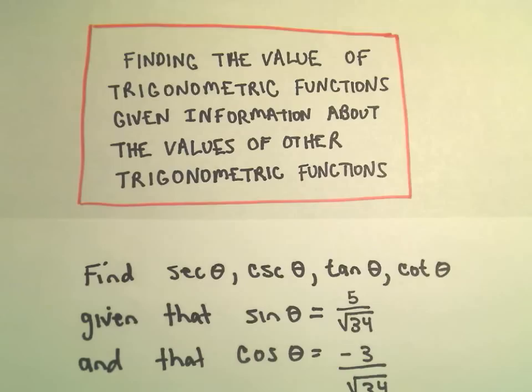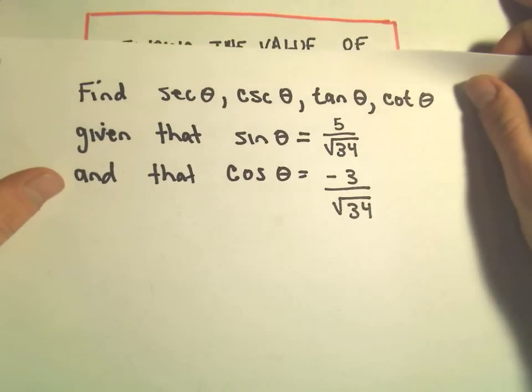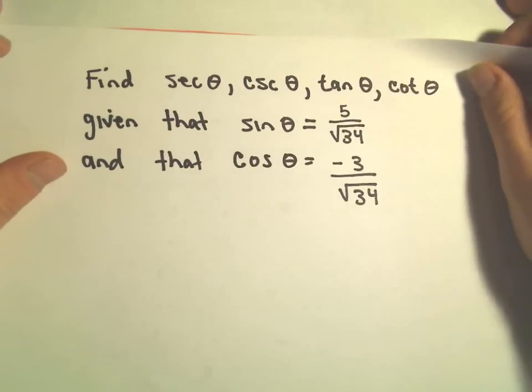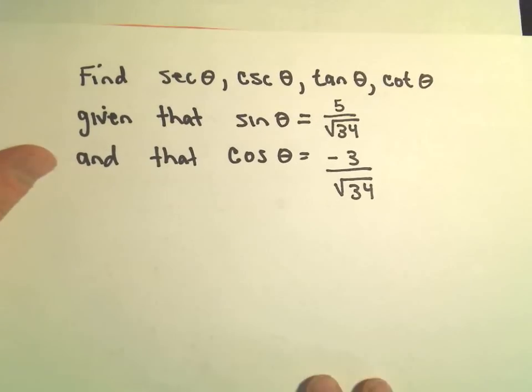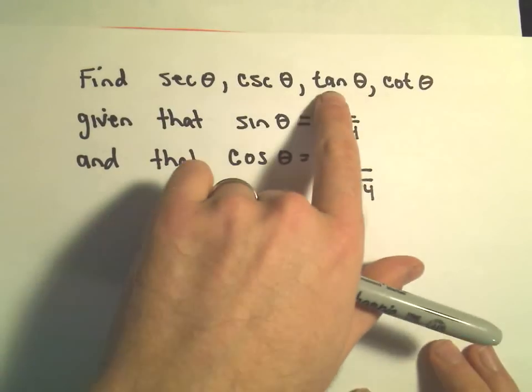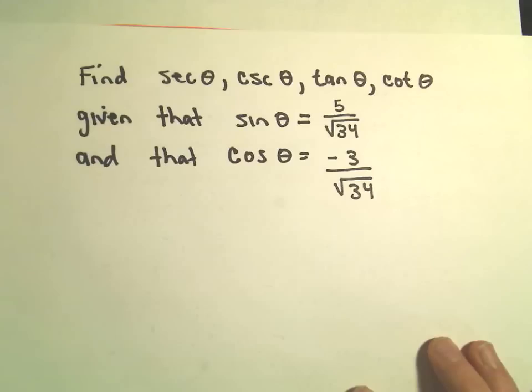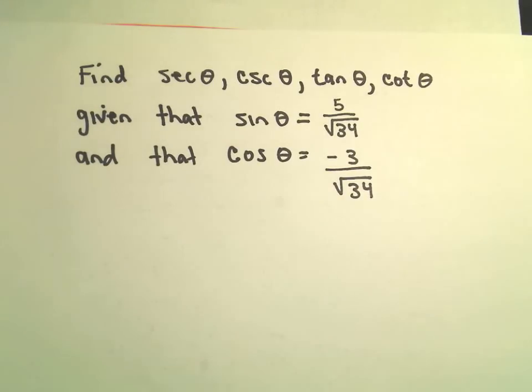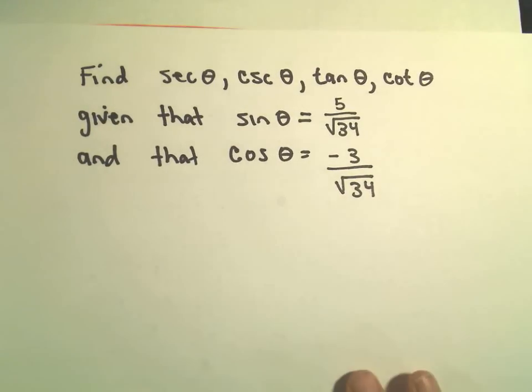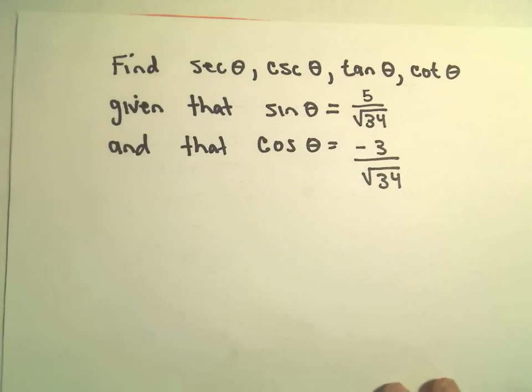In this video I want to do an example of finding the value of trig functions if we know values of other trig functions. This is something very common. You'll be given a little bit of information and you'll need to deduce the other trig values. This one here is not bad at all. We want to find secant, cosecant, tangent, and cotangent of the angle θ, given that sin θ = 5/√34 and cos θ = -3/√34.